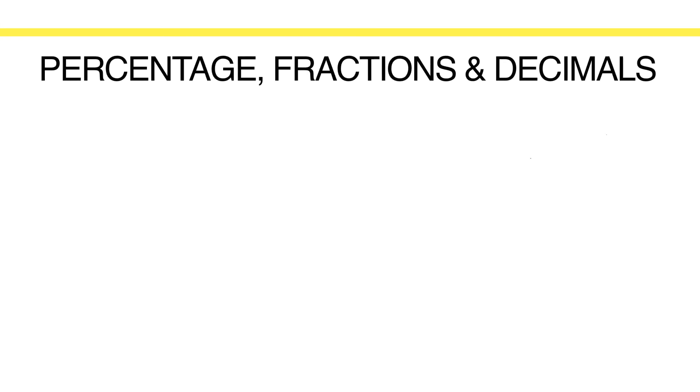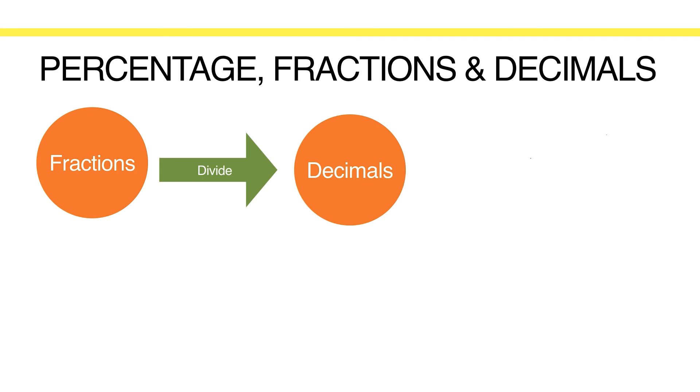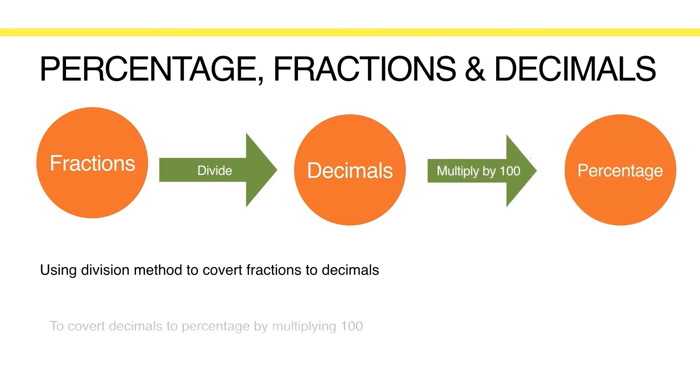We have already demonstrated how we can use fractions and decimals to find percentages in previous examples. Conversions between fractions to percentages and to decimals are really important to know, as it helps you simplify your calculation steps when finding percentages. In order to change fractions to decimals, we first divide the numerator by the denominator of the fraction, and we can just multiply the decimal by 100 to change to percentages.